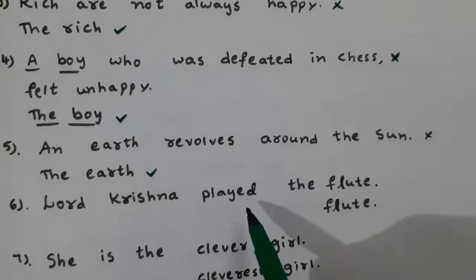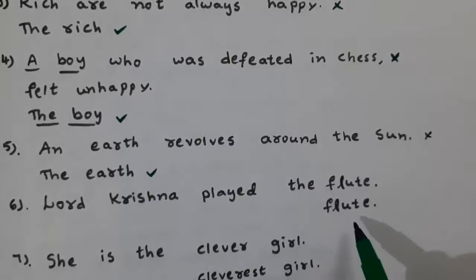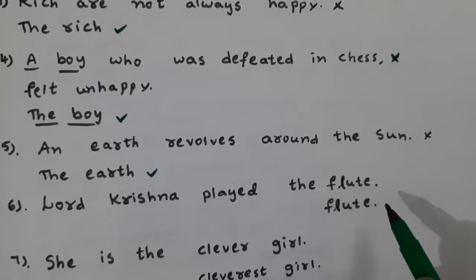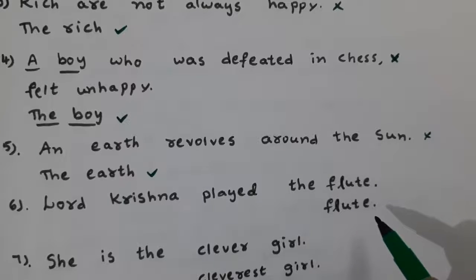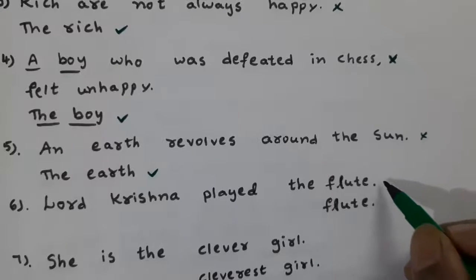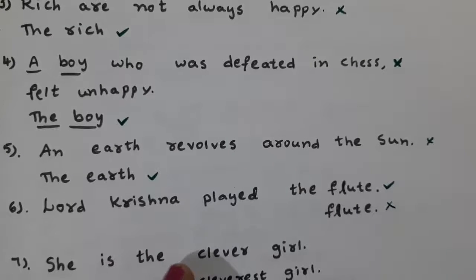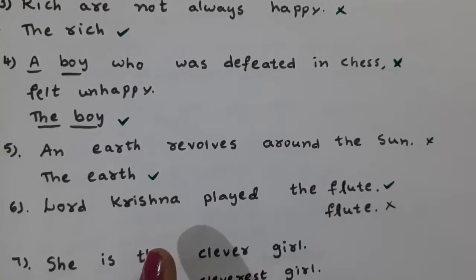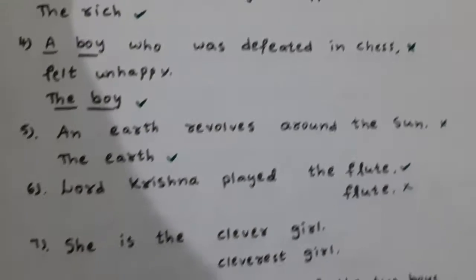Next: 'Lord Krishna played the flute' versus 'Lord Krishna played flute.' Which is correct? 'Lord Krishna played the flute' is correct. Before musical instruments, we use the definite article 'the' when they represent the type of music — for example: the piano, the flute, the guitar.